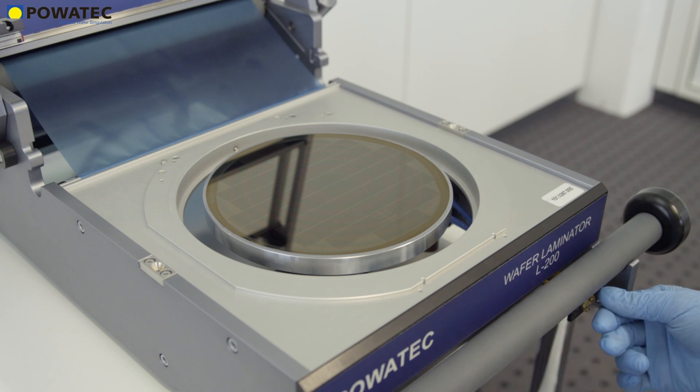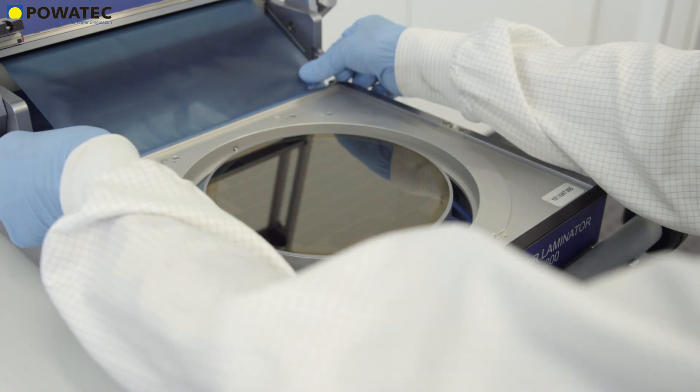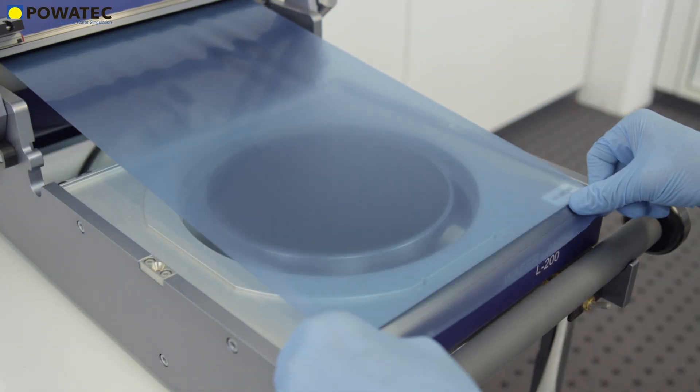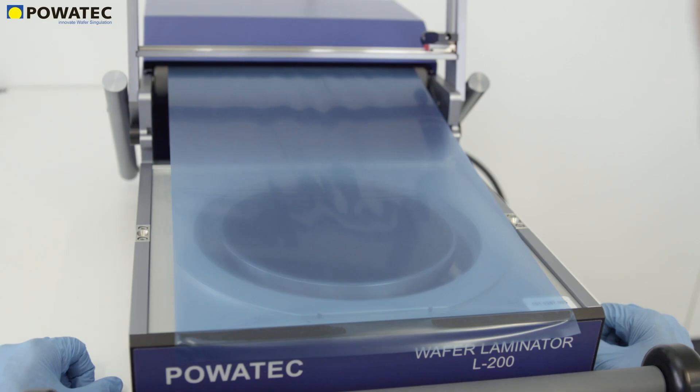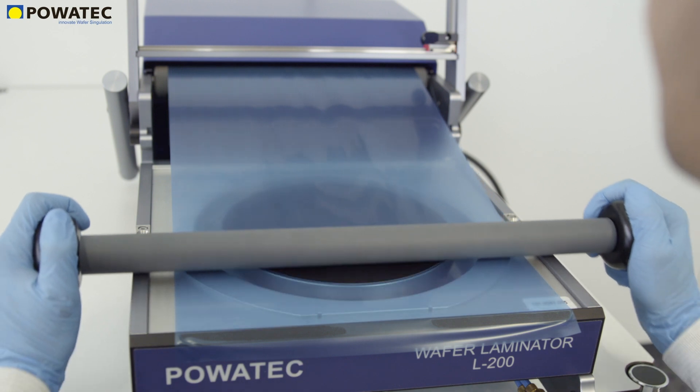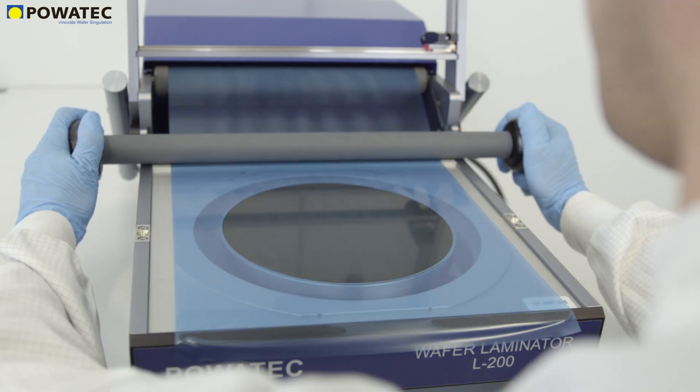Once the wafer is carefully placed on the chuck, the operator engages vacuum to ensure the wafer remains in place during the mounting process. The tape is then pulled with both hands to the edge of the mounting table. Now the tape is brought into uniform contact with the wafer by means of a high-precision laminating roller specially developed by Povitek.